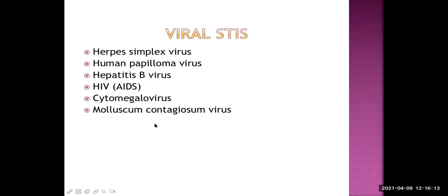From the viral list, we have herpes simplex virus type 2 — type 2 is more important here — human papillomavirus, hepatitis B virus, HIV, cytomegalovirus, and molluscum contagiosum, all considered types of STI caused by viruses. Again, the top four are important: herpes simplex virus type 2, HPV, hepatitis B, and HIV.